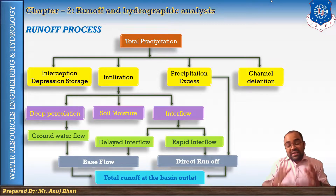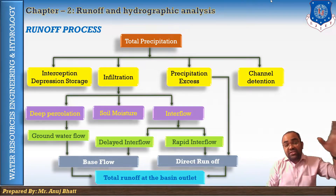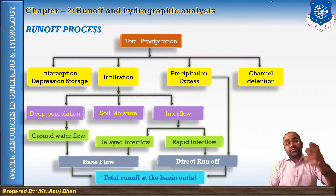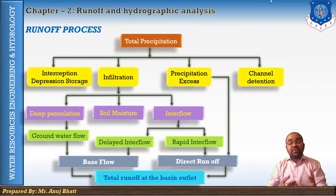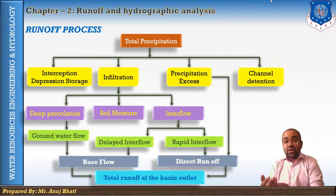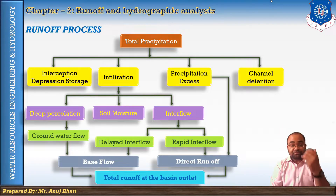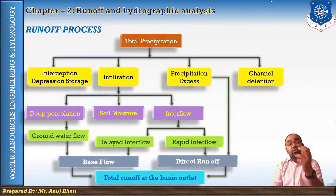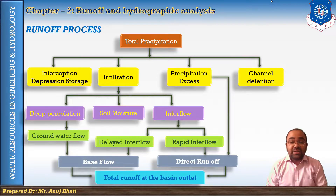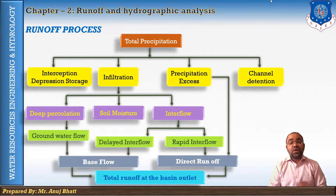That amount of rainfall is distributed into interception and infiltration. Also some amount of water gets evaporated, some amount of water is considered as excessive precipitation which leads to surface drainage, and some amount of water goes to the channel detentions.